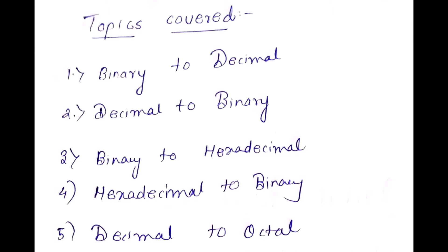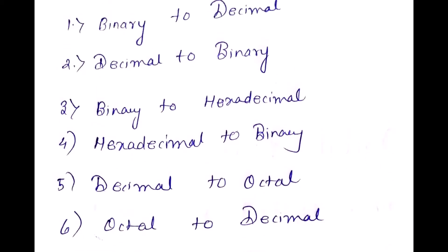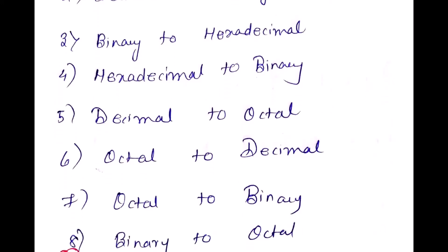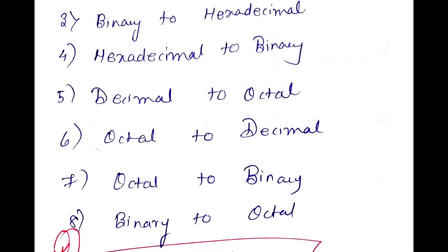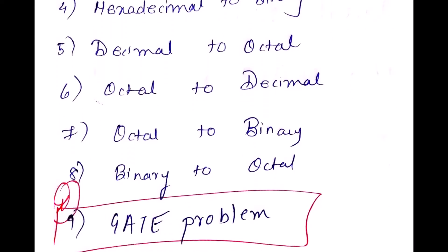The links are in the description box. A previous video has already been uploaded on introduction to digital electronics — if you haven't watched it, please go watch it because that is the basis for all the topics we're going to learn. As you can see on screen, the number system conversions we'll cover are: binary to decimal, decimal to binary, binary to hexadecimal, hexadecimal to binary, decimal to octal, octal to decimal, octal to binary, binary to octal, and finally a GATE problem at the end.